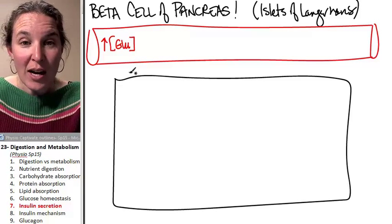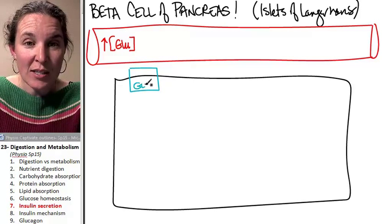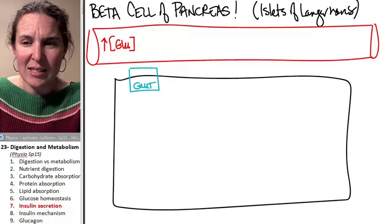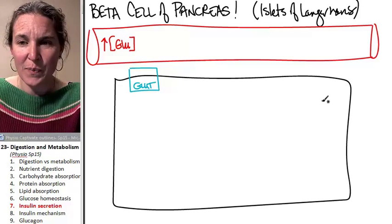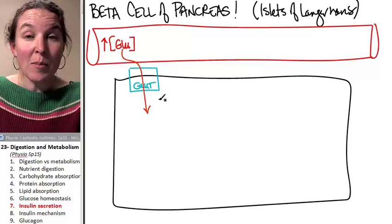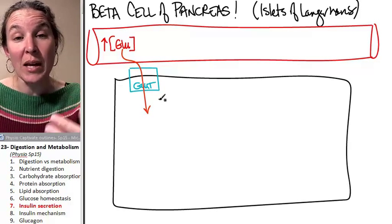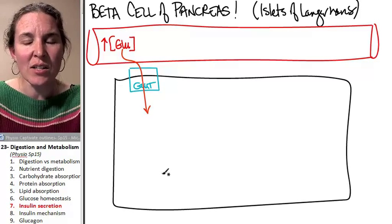Your pancreatic cells have glut transporters. Now, I'm just making this visual for you. So if we have glut, we're going to be able to transport the glucose into the beta cell easy, just down its concentration gradient.